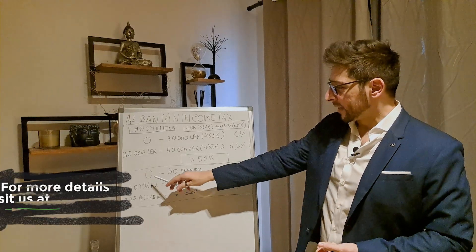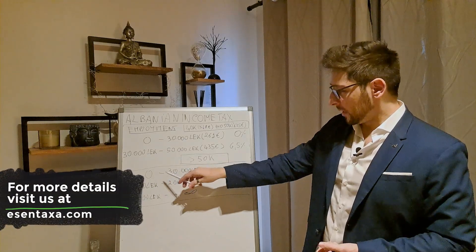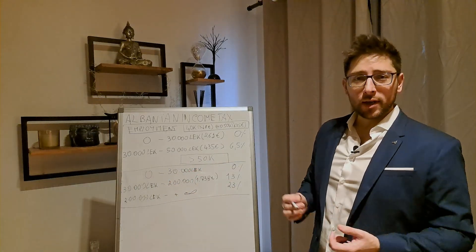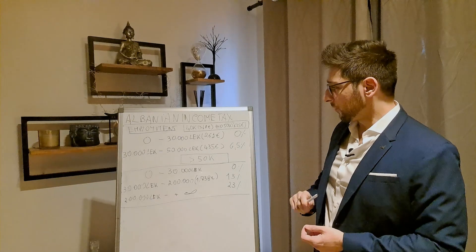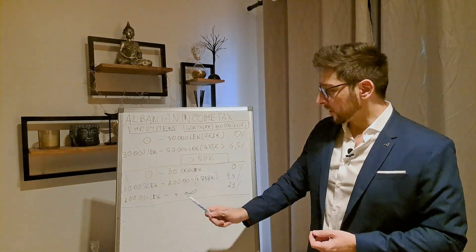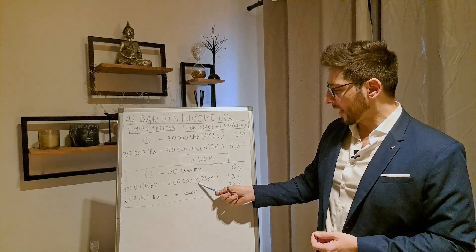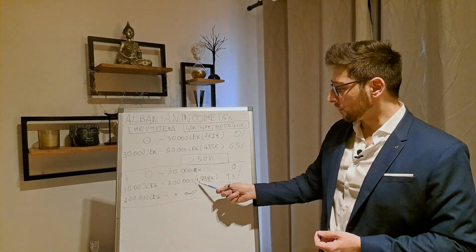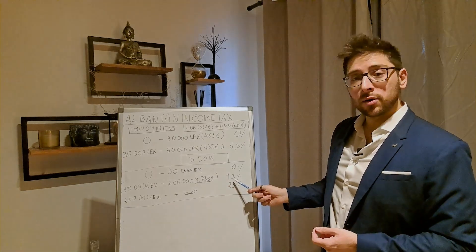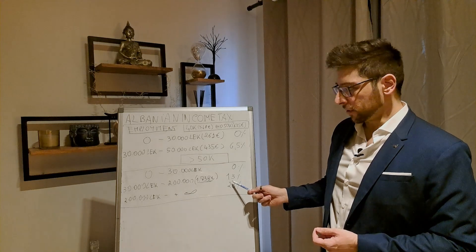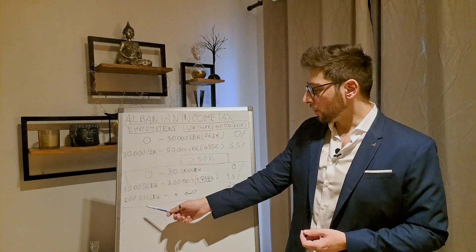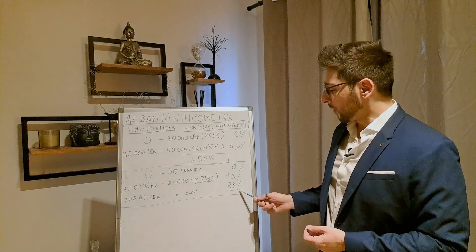So you're going to have 0 up to, from 0 to 30,000 LEC per year as income, 0%, like before. Between 30,000 and 200,000 LEC, which is basically 1,738 EUR per year. And this is going to be taxed at 13%, and everything above will be taxed at 23%. So, of course,